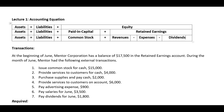Notice another little acronym here. The primary components of retained earnings — revenues, expenses, and dividends — spell RED. So if you can remember RED, those are the retained earnings accounts.